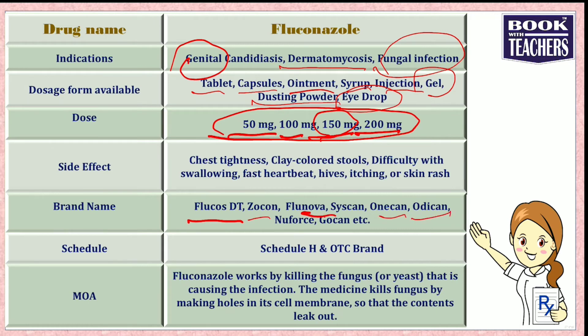Different brands are available with fluconazole; the famous ones are Flucosdt, Zucon, Flunova, Ciscan, Odican, and many more. This is a schedule H drug, but most widely it is also used as an OTC drug, meaning any person can go over the counter and take this medicine.